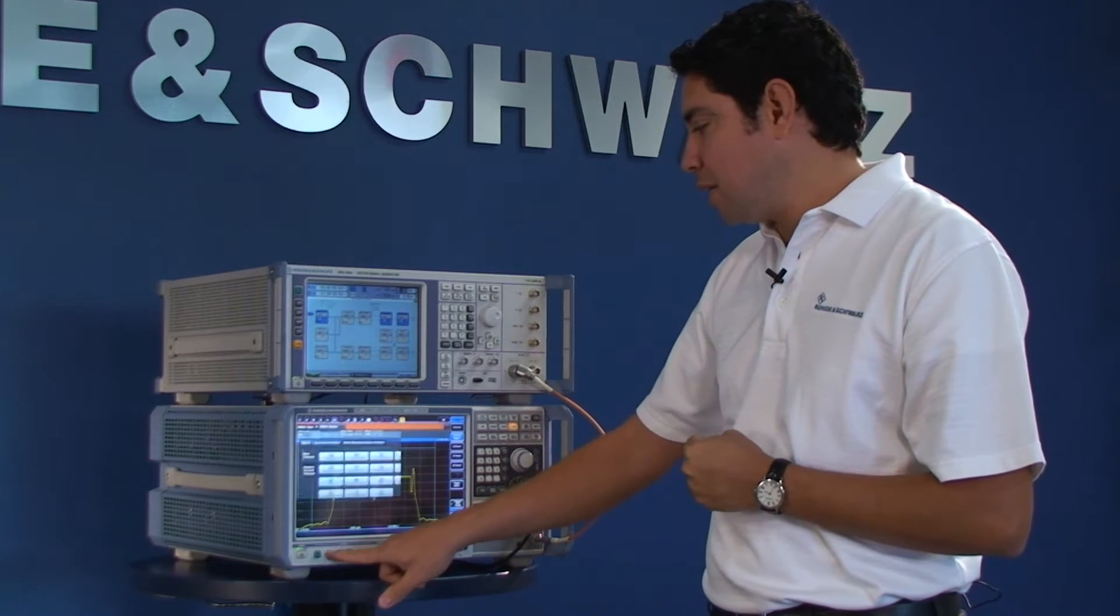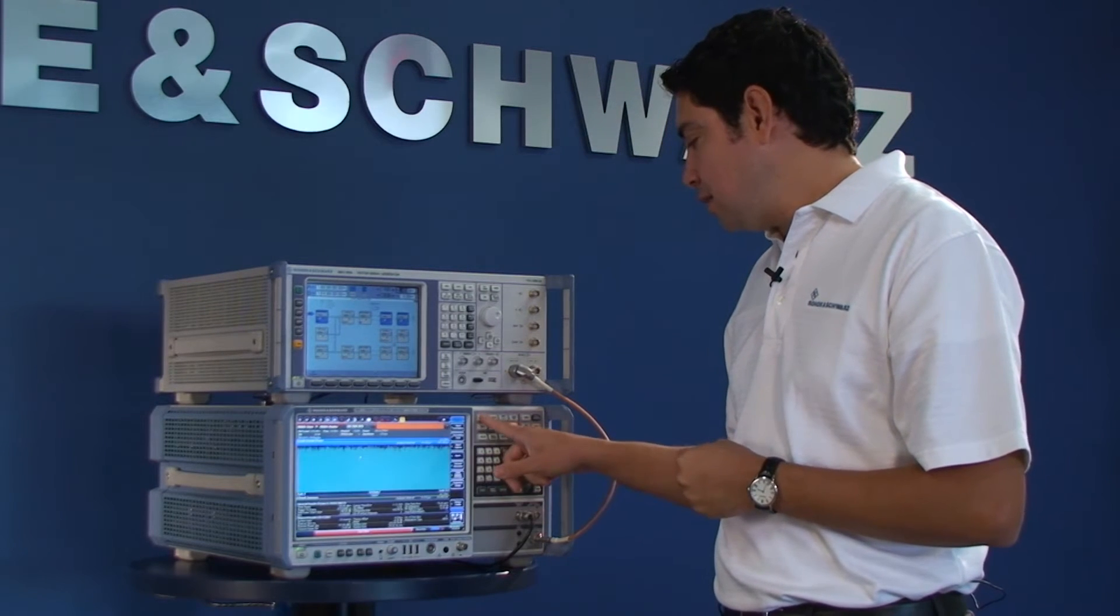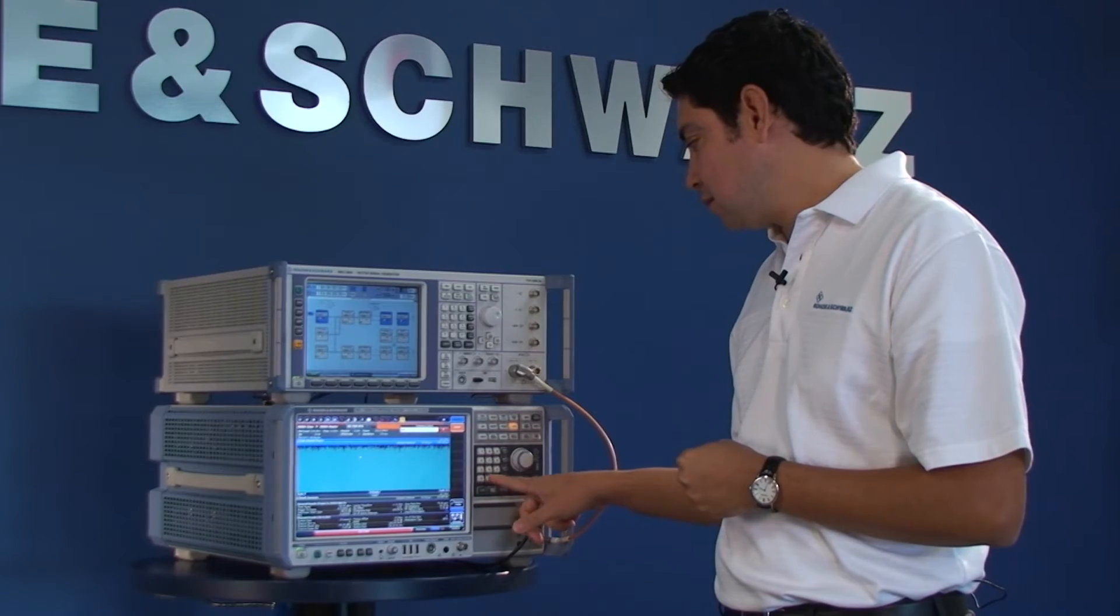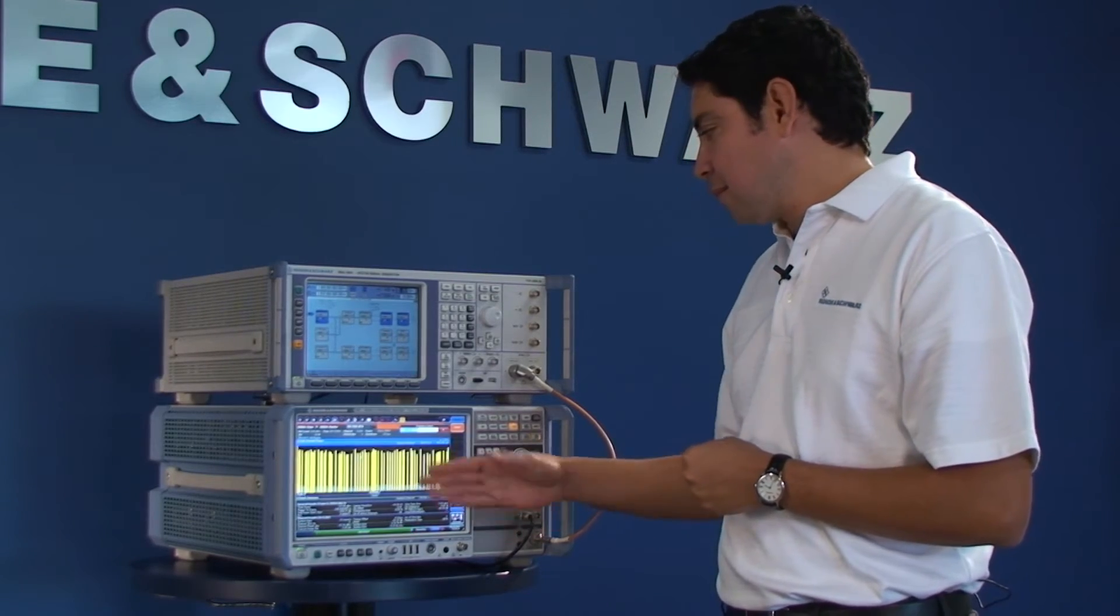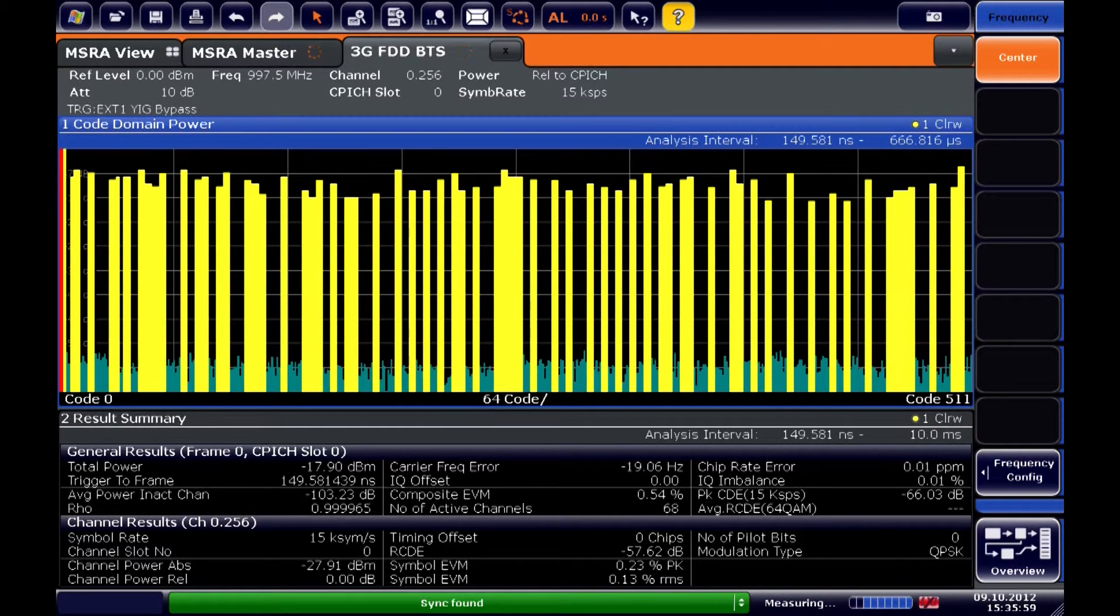After I do this, I can go back and re-enable my UMTS analysis. I just need to tune in to the right frequency. And I can see again the same type of analysis that I had before in my spectrum analyzer view.